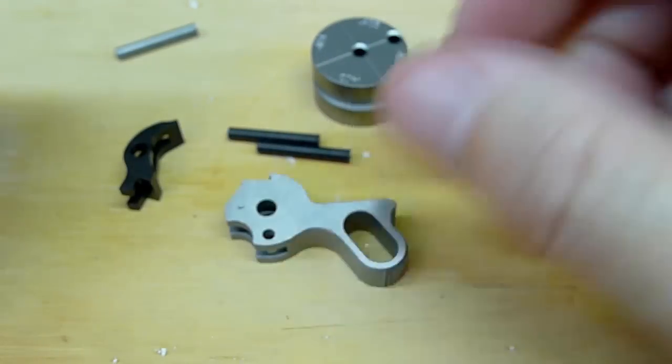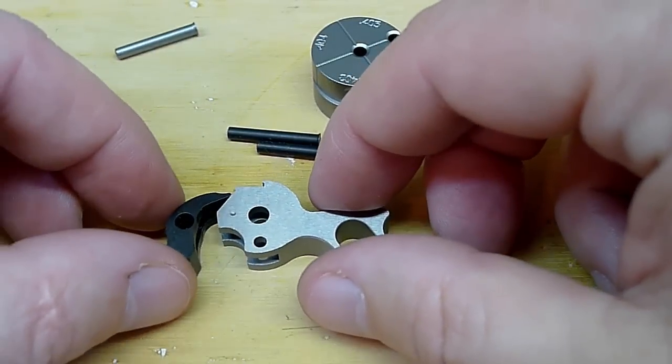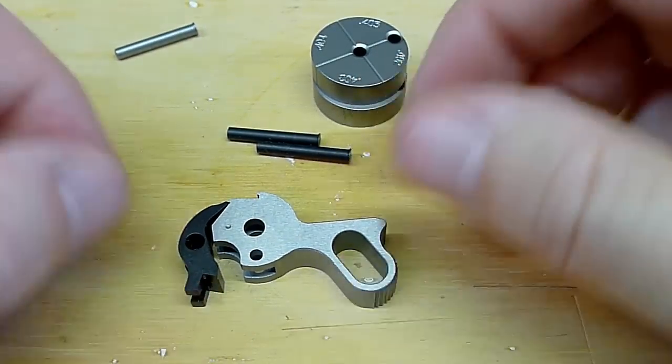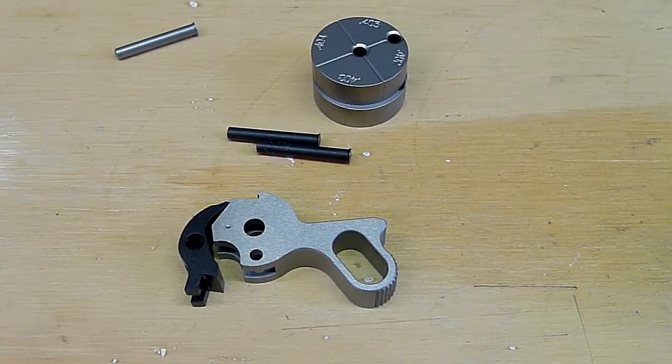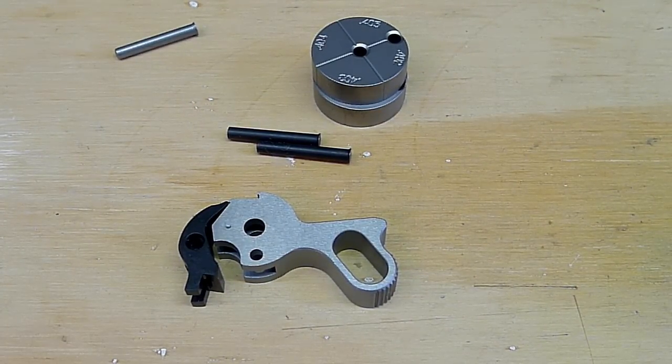Anyway, so those are your basics for the interaction between the hammer and the sear on a 1911. I hope that helped you understand that a little bit better.